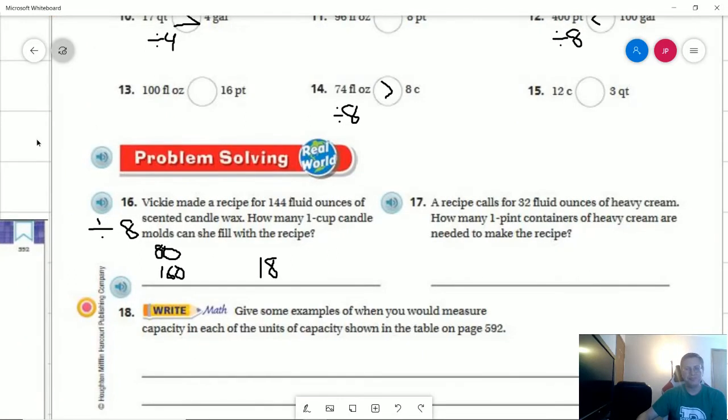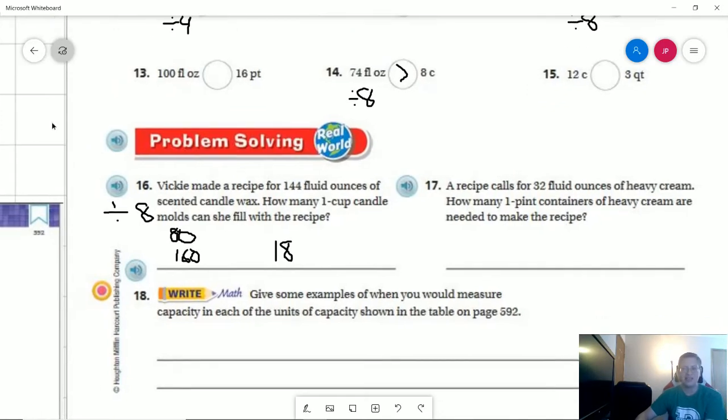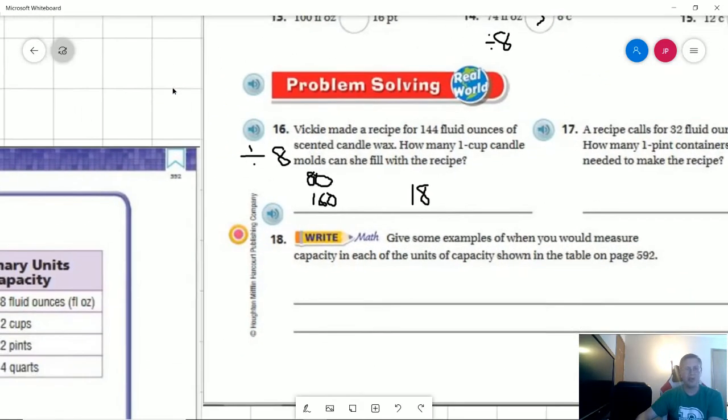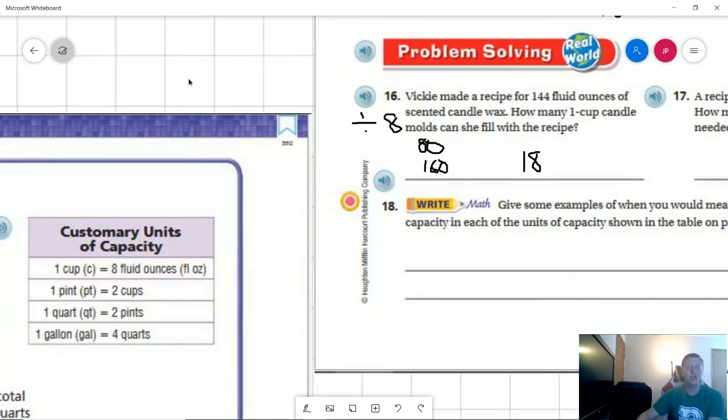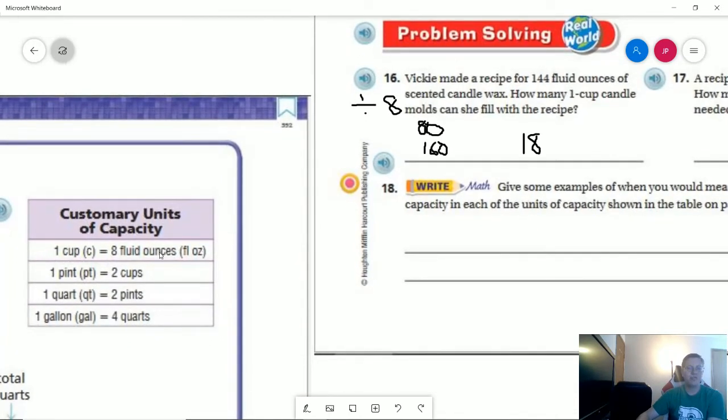Number 18, give some examples. I'm not going to take the time to write this. I'm going to briefly explain. This was the table that they were referring to. We would use cups most often when we are using measurements for cooking. We could use fluid ounces. We could also use dry ounces. It kind of works out the same way.